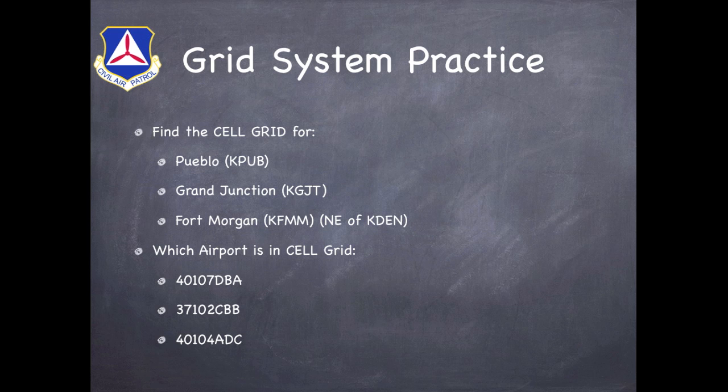And now let's do a little bit of practice using the cell grid system. Again, we're going to look for the 7.5 by 7.5-minute grid overlying three airports: Pueblo, Grand Junction, and Fort Morgan. What you're looking for is that five-digit number and the three-letter designator for each one of these. Also, when you've found those, go ahead and find which airport actually underlies the following three designators. Go ahead and take a couple of minutes, pause this video, and when we come back we'll have the answers up.